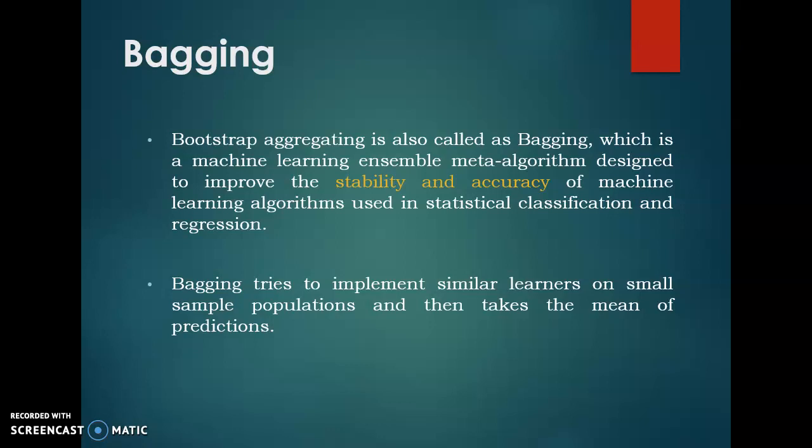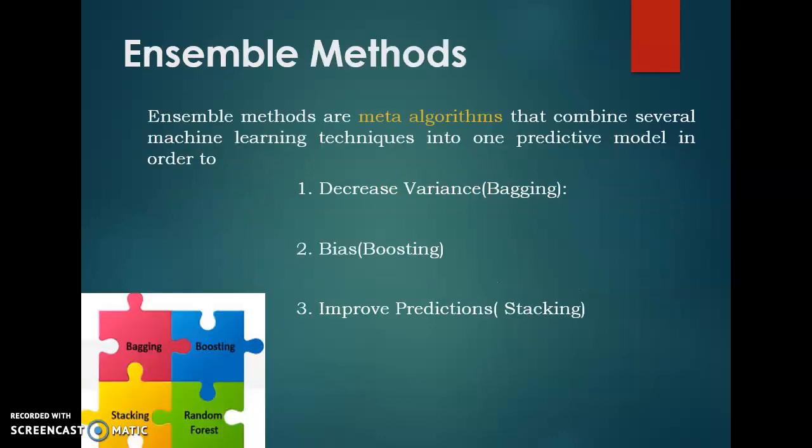Ensemble methods combine several decision trees, and that combination of several decision trees is done so that we can produce better predictive performance than utilizing a single decision tree. The main principle behind the ensemble model is that a group of weak learners come together to form a strong learner. Generally this principle is used in our daily life — if we want to be strong, a group of weak persons can work together and become strong. The same principle applies to ensemble methods.